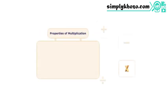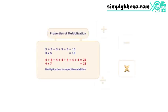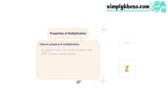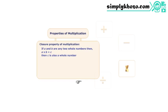The process of multiplication is repetitive addition. Multiplication of whole numbers is similar to multiplication of natural numbers. According to the closure property of multiplication, the product of any two whole numbers is also a whole number.